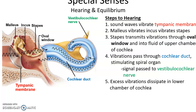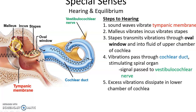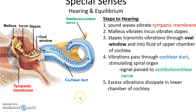Sound waves hit the tympanic membrane, causing it to vibrate; that causes the malleus to vibrate, then the incus, then the stapes, then the oval window — leading to pressure waves in the fluids in the cochlea. The pressure waves travel along the cochlea until they reach the cochlear duct, which is tuned to different frequencies of vibration. When vibrations reach the correctly tuned portion of the cochlear duct, they pass through, stimulating the spiral organ found within it. Any extra pressure waves travel through the fluid in the lower chamber and out the round window, where they are dissipated.